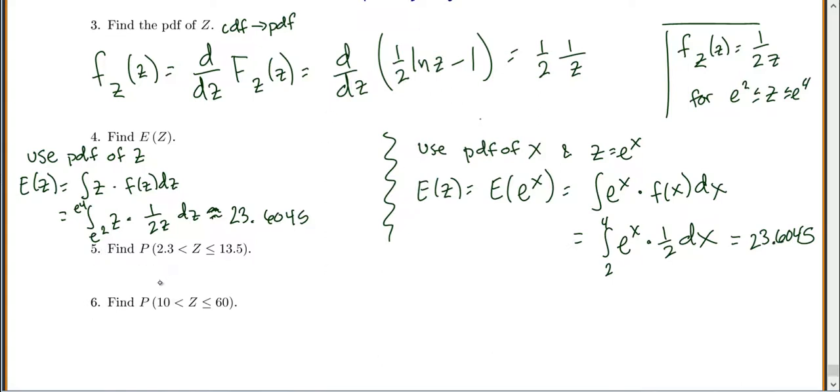Let's see, let's come down to number 5. Let's find the probability that z is between 2.3 and 13.5.